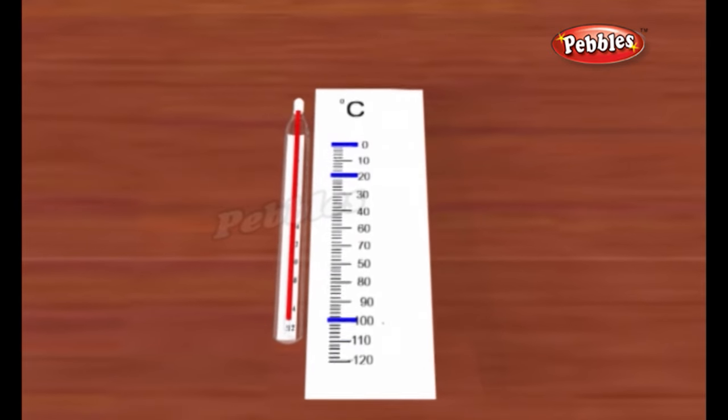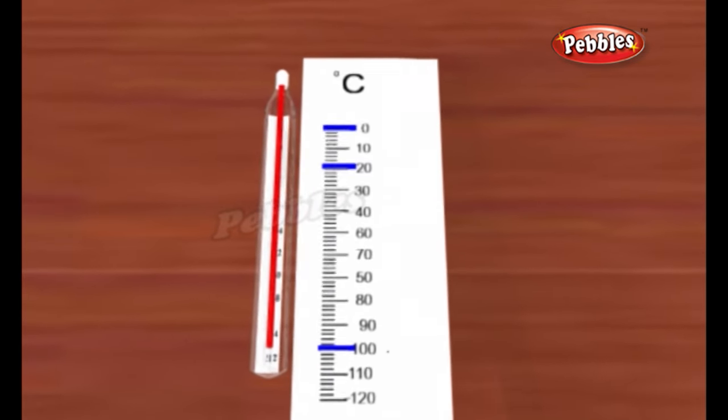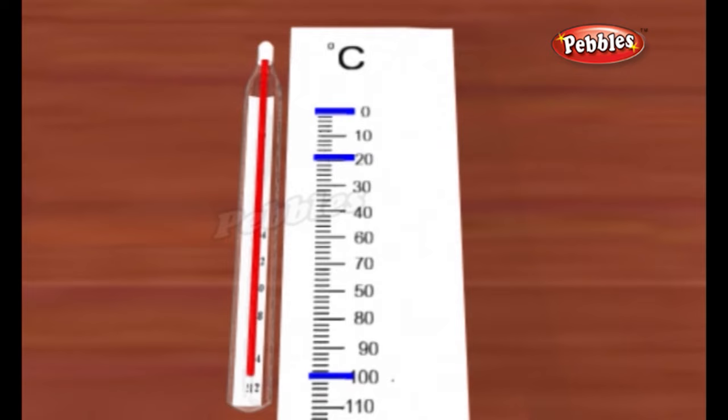All we have to do then is divide the scale between these two fixed points into 100 equal steps.